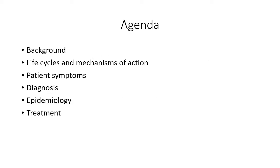Before we get into the meat of the presentation, here's a brief outline of the agenda. First, we're going to cover the background of the organisms: the common liver fluke, the Asian liver fluke, and blood flukes. We're going to cover life cycles and each organism's mechanism of action, the symptoms of each disease, how medical professionals typically diagnose the disease, epidemiology — how we control the spread of the parasite in its environment — and also how we treat it when someone presents with a parasitic infection.